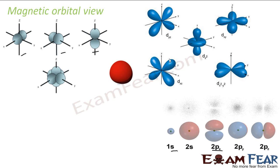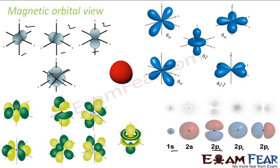Then we have d orbitals — five types. Note that the combined view shown is not a single type; there are actually five types of d orbitals. Each orbital holds two electrons. And then we have f orbitals — seven different types.